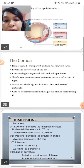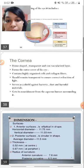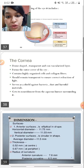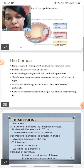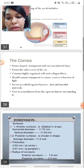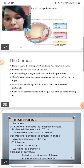The cornea contributes about 40 diopters of refractive power of the eye. It is a dome shape, transparent and non-vascularized layer and forms the outer covering of the eye. It is composed of highly organized cells and collagen fibers. To ensure correct refraction of light, it should always remain transparent.